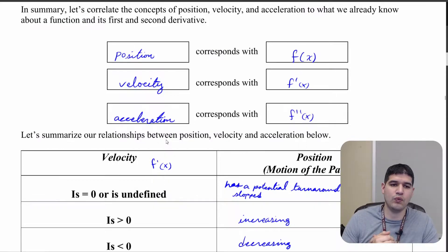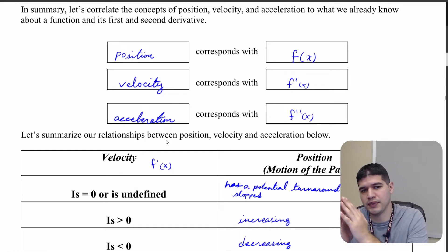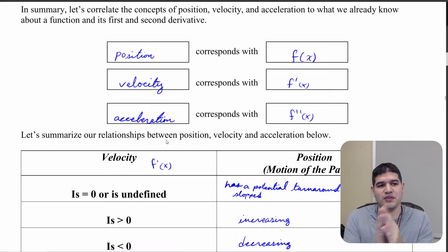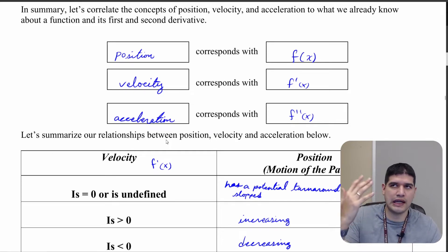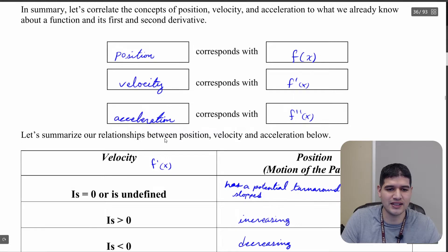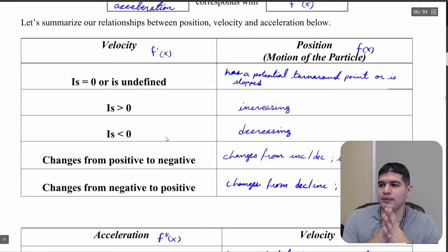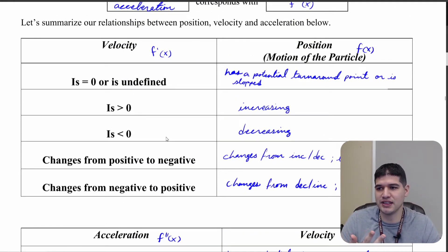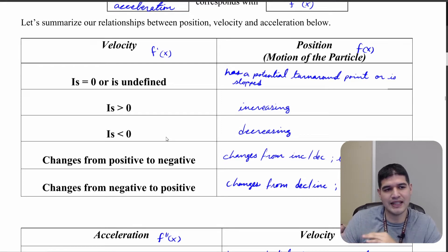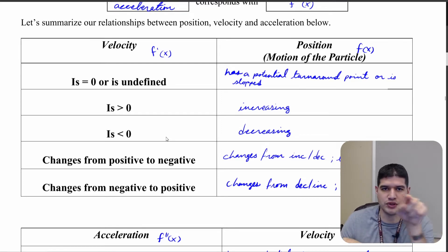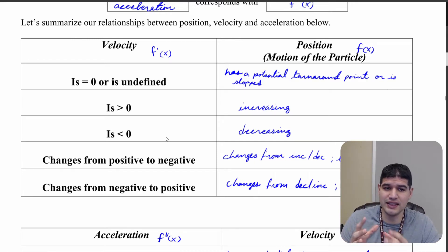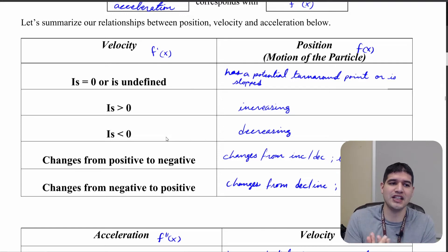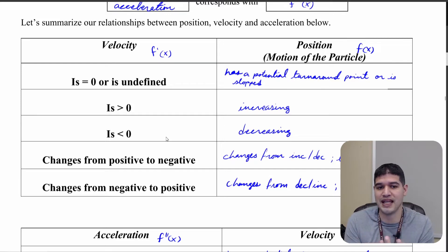We always want to correspond position, velocity, and acceleration with f, f prime, and f double prime. When we have velocity, think of that as f prime, and position is f of x. That's the motion of the particle going back and forth — how fast it goes is our velocity. When velocity is zero or undefined, the particle could potentially be turning around or has just stopped at that point.